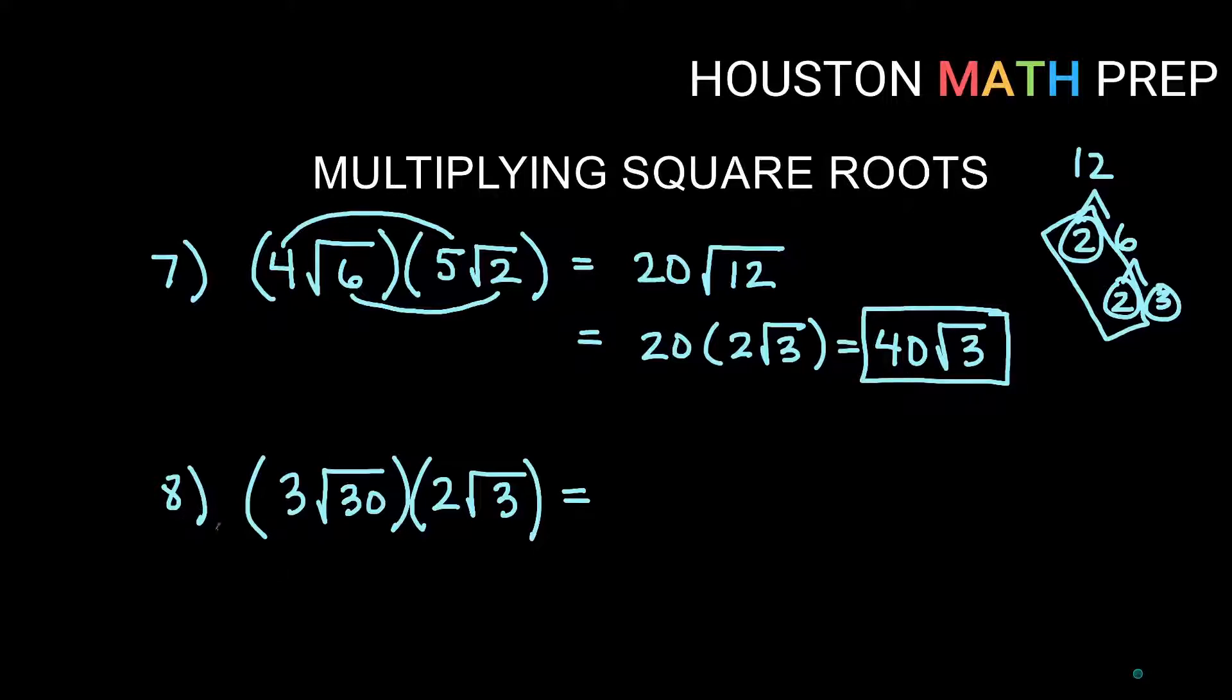Similar here. Number 8. I have a 3 and a 2 on the outside, so multiplying those right away. 3 times 2 gives me 6. Underneath the root, we have 30 times 3, and that gives us 90. Square root 90 might look familiar to you. It can be simplified. So we want to simplify the insides.